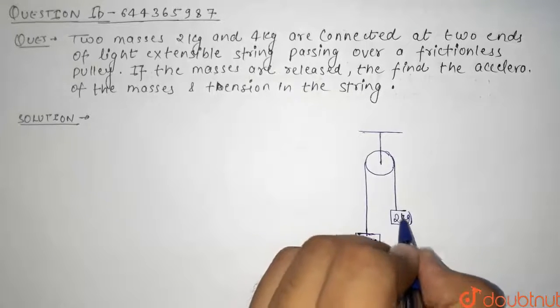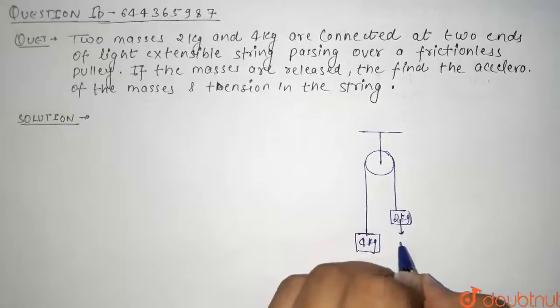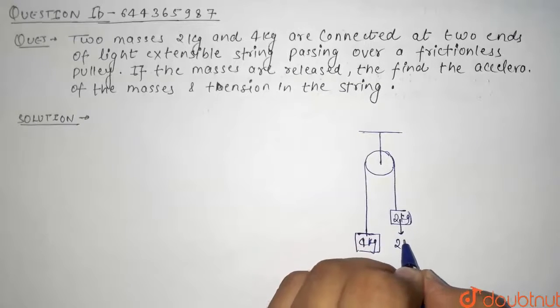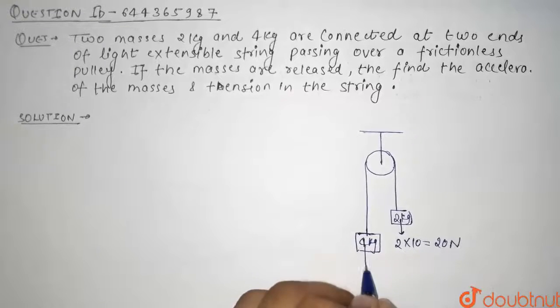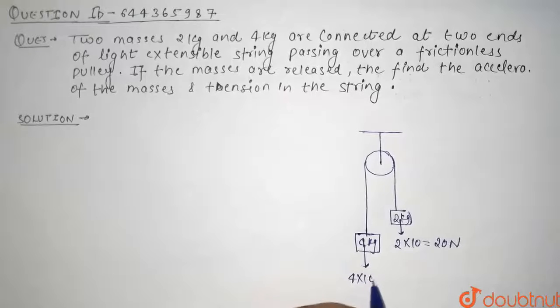So what is the weight of 2 kg that is acting downward? It will be mg, that is mass of the 2 kg, that is 2 into g so it will be 10, so it will be 20 newton. So what will be its weight? It will be 4 into 10 that is 40 newton.